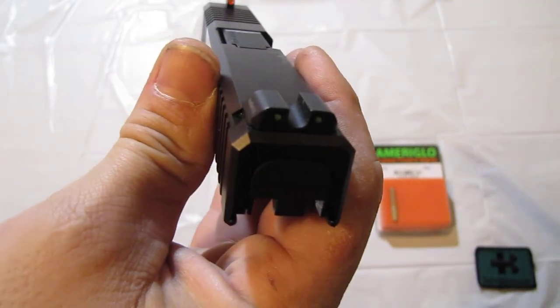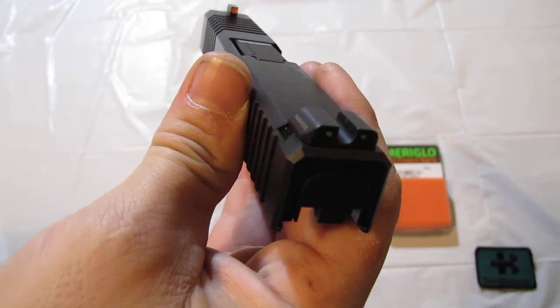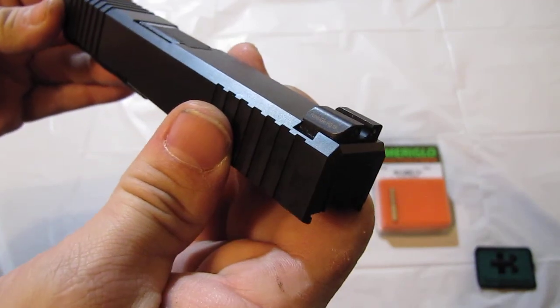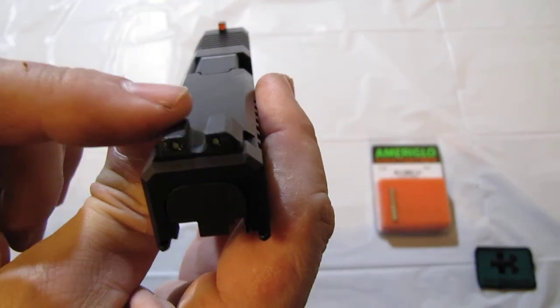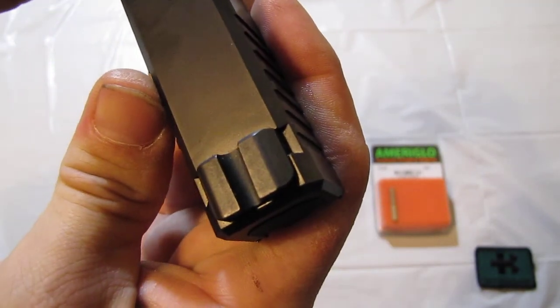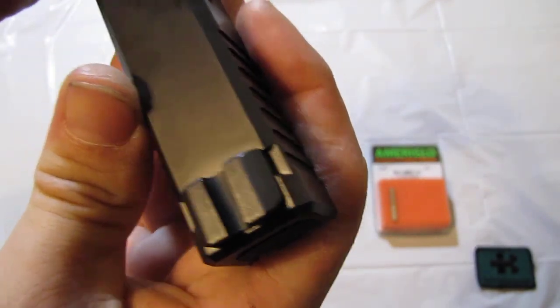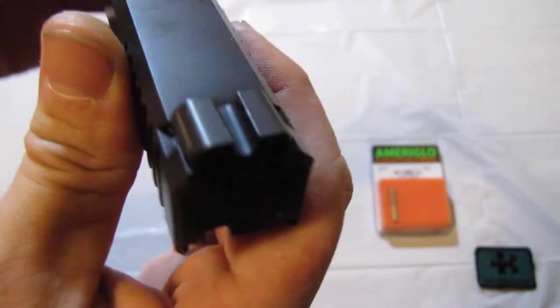They sell them on eBay for a rather inexpensive price. For me I made my own sight tool. It's also needed to adjust the rear sight because that is completely in the slot. There is no screw or nothing. That is just a press fit.